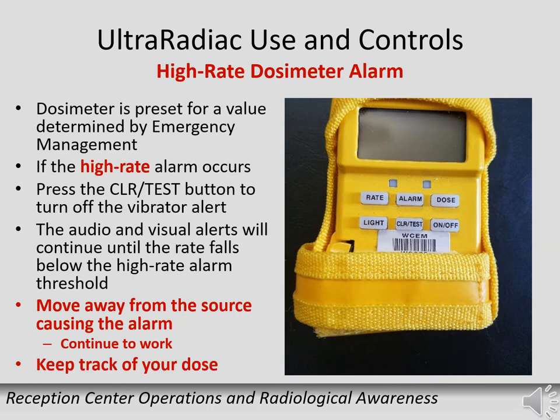The rate alarm also has a high rate alarm setting. If the dosimeter reaches this value, the unit will alarm with vibration, visual, and audible alerts. Press the clear test button to reset the vibration alert; the visual and audible alerts will remain until you are below the alarm setting. If the high rate alarm occurs, move away from the source if possible and continue to work, and increase your dose readings.